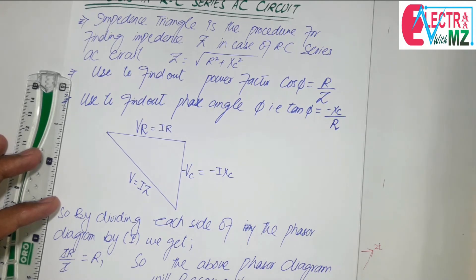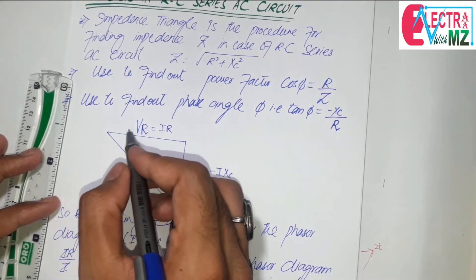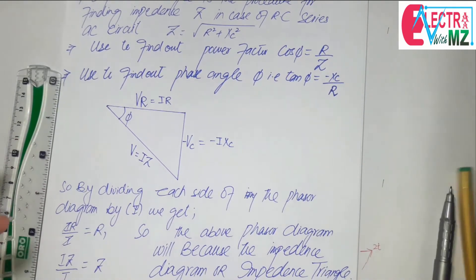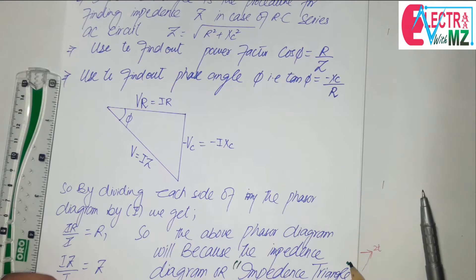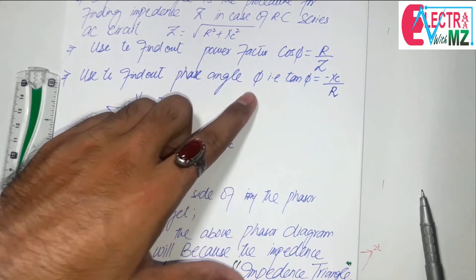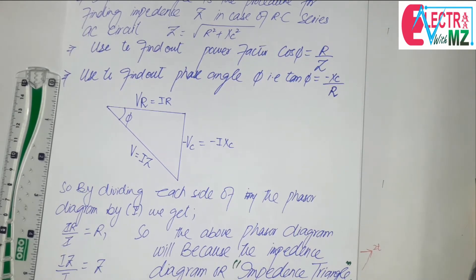So the above phasor diagram becomes the impedance diagram or impedance triangle. This is the impedance triangle which is used to find out the impedance of the circuit, power factor, and phase angle phi. So once we get the impedance of the circuit, we can easily find out the power factor as well as the phase angle phi.